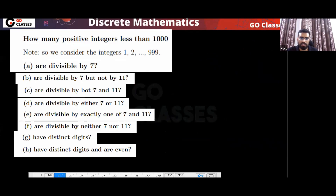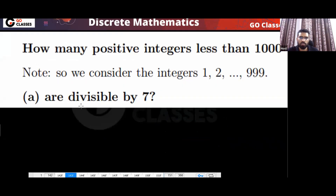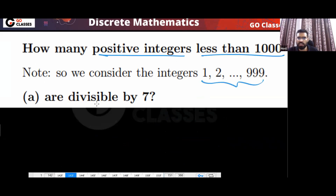Let's solve these questions — all these variations. How many positive integers less than 1000 are divisible by seven? That will be floor(999/7), and this will be the answer.